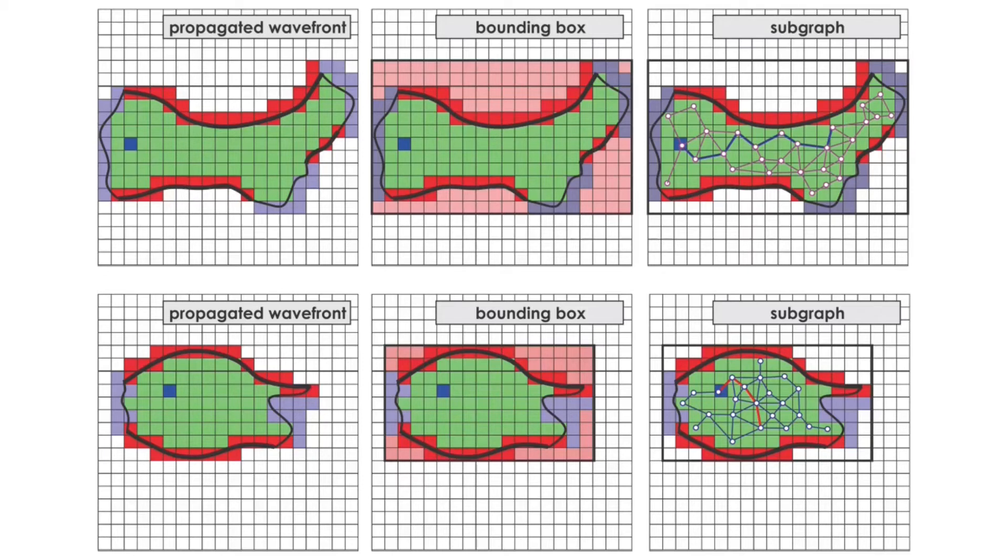Since in the centralized computational hub map alignment and merging takes place, any corrections to the transform of the submap are also carried over to the graph vertices and accordingly updates their global position.